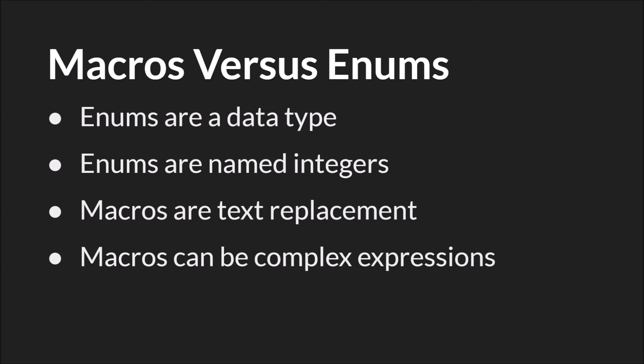Let's briefly talk about the difference between macros and enums. Both macros and enums are constants — they cannot be changed once the game is compiled. Both can be created anywhere in your code, and once created can be referenced anywhere else. They can both be created in code that is not even called, for example in a script. Macros and enums must both be unique. However, enums are data types and only named integers, whereas macros are text replacement — they're not their own data type. It's simple copy and paste.